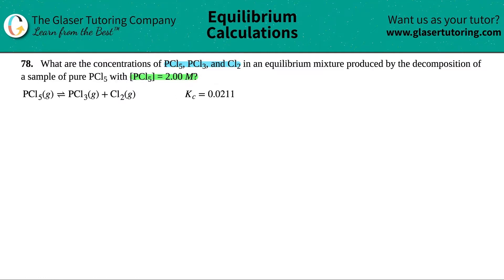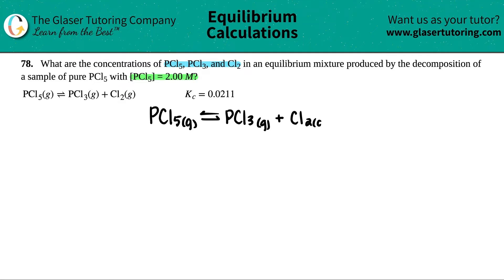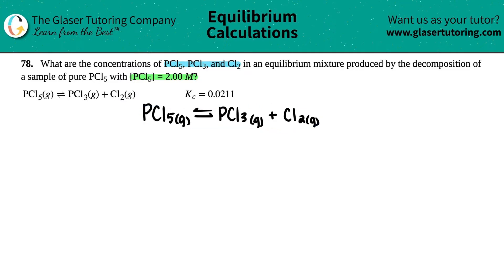The first thing I'm going to do is write the equation a little bigger so we can work with it. We have PCl5 (gas) coming to equilibrium with PCl3 and Cl2. I'm scanning the equation and it looks balanced to me — you could always pause the video to practice balancing, but this looks good.